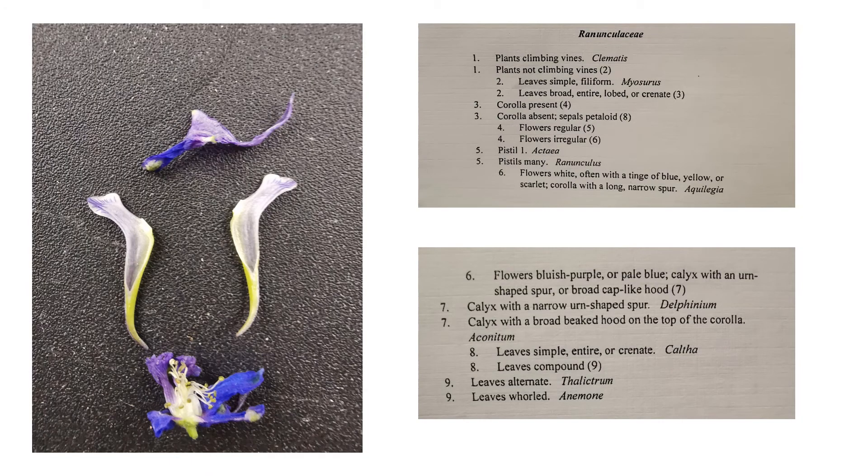Now, when we get to Ranunculaceae, this plants climbing vines, Clematis. This is a very beautiful plant I expect you'll encounter. I've got a video from the Uintas that has an example of this coming soon. But this is not a climbing vine. And it has these lobed leaves that once you've seen a lot of them tempt you to identify this by just by the leaves, but that's unwise, but they are distinct leaves. So we've moved on to three.